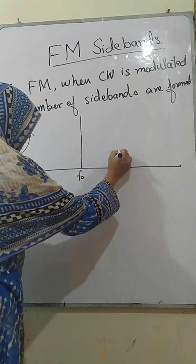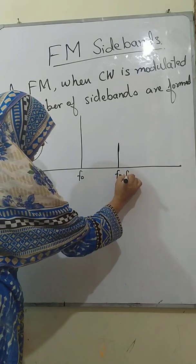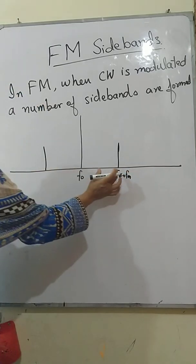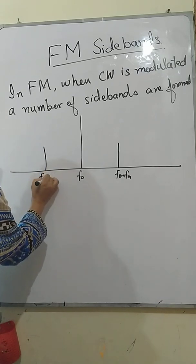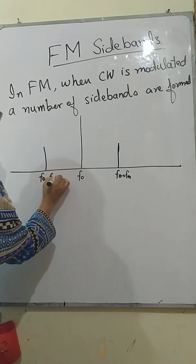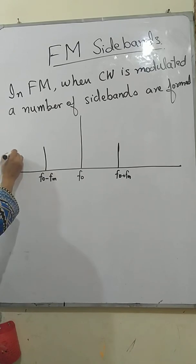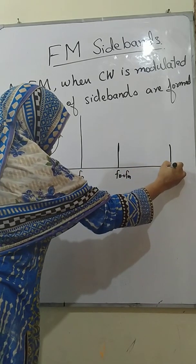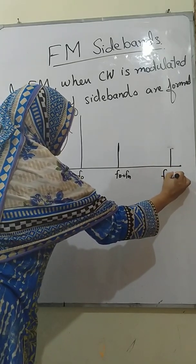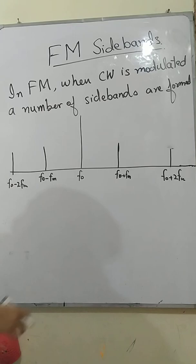Here is one sideband at F0 plus Fm, and another sideband at F0 minus Fm — both sidebands are apart from the center frequency by Fm. The next bands are at F0 plus 2Fm and F0 minus 2Fm. Similarly, the next frequency will be F0 plus 3Fm, and here F0 minus 3Fm.